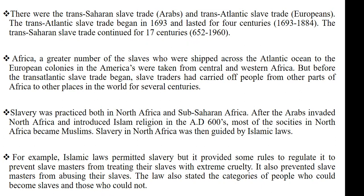Slavery was practiced both in the northern parts of Africa and in the sub-Saharan parts of Africa. Slavery in the northern parts of Africa began when the Arabs invaded North Africa and introduced Islam to the people. This happened somewhere in the year AD 600s. Because the northern parts of Africa had been invaded by Arabs and most of the people had converted to Islam, slavery at the time was guided by Islamic laws.